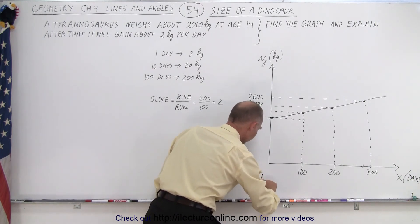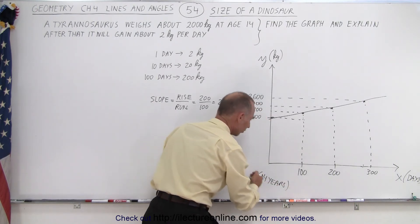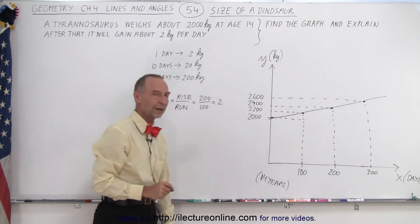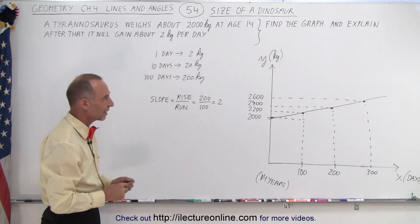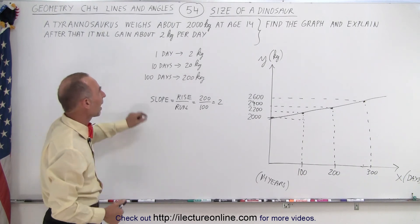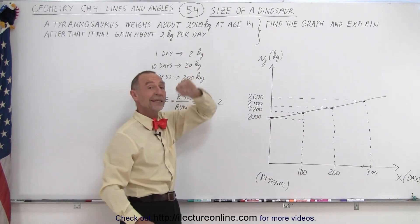So this is starting at 14 years of age and then after that you can see that there's a rapid growth for every 100 days as there's an additional 200 kilograms gained. And so here we can see that this graph represents the growth of a Tyrannosaurus rex after it's reached, so to speak, the teenage years.